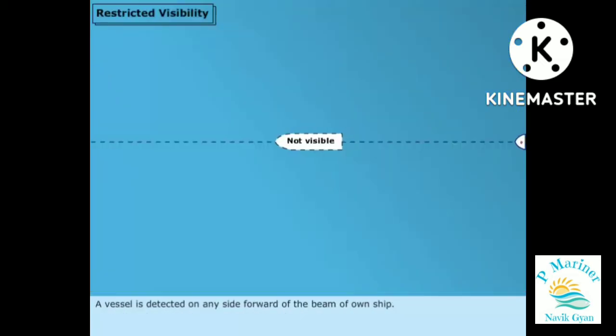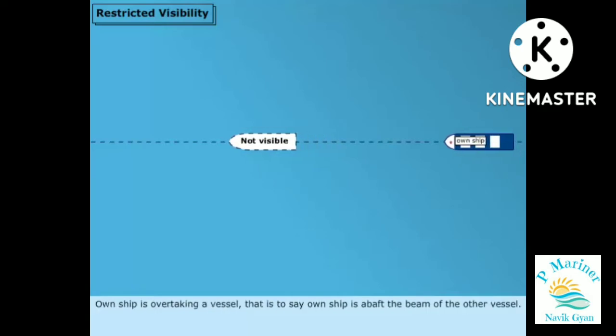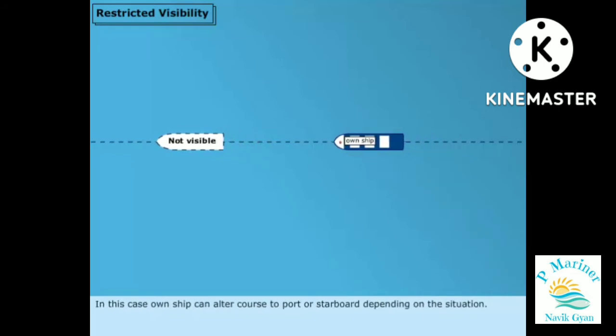A vessel is detected on any side forward of the beam of own ship. Own ship is overtaking a vessel. That is to say, own ship is abaft the beam of the other vessel. In this case, own ship can alter course to port or starboard, depending on the situation.